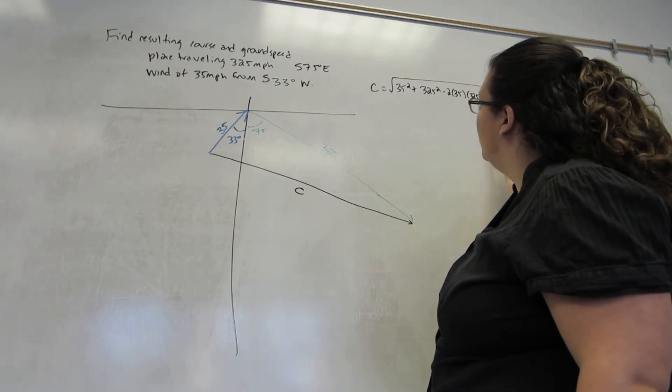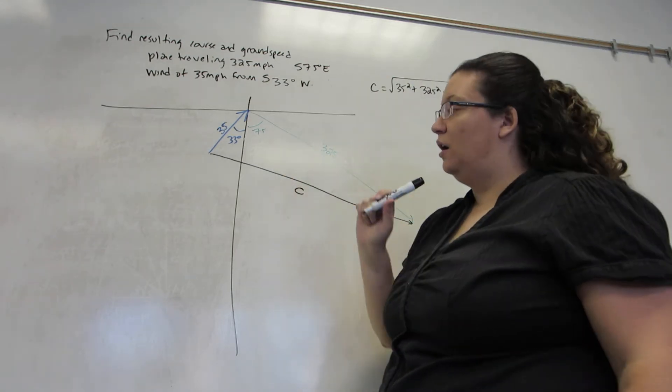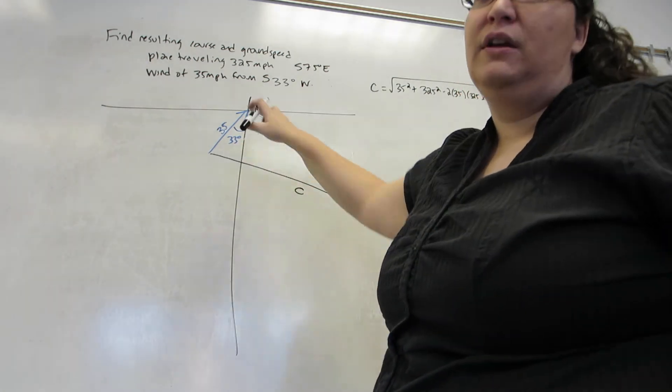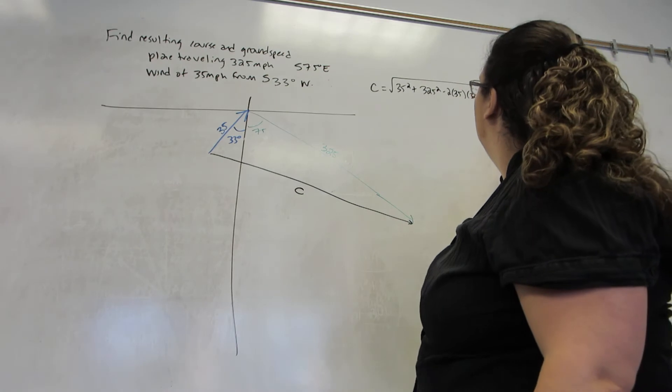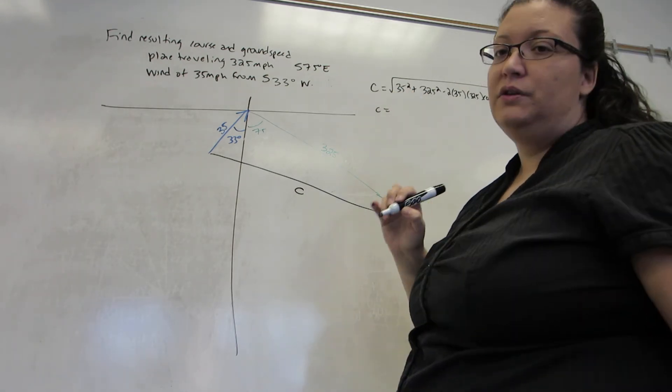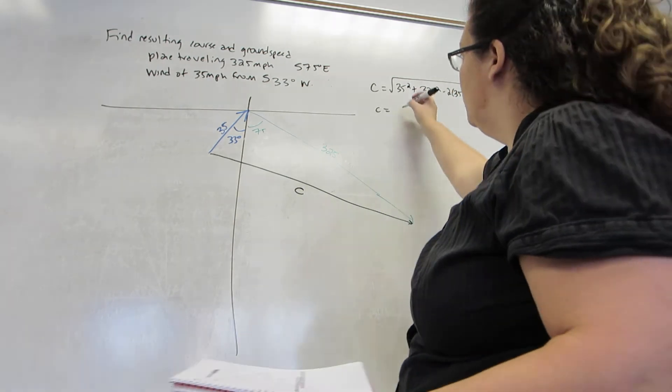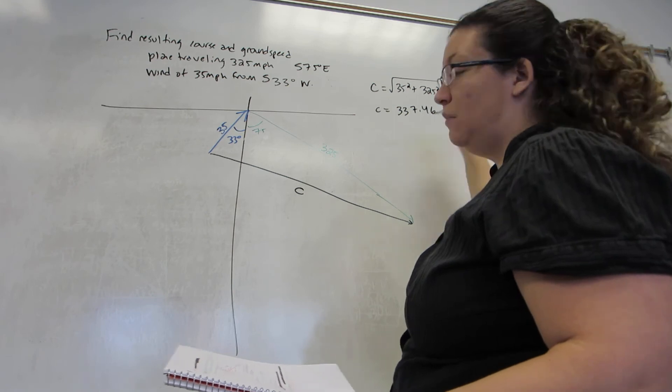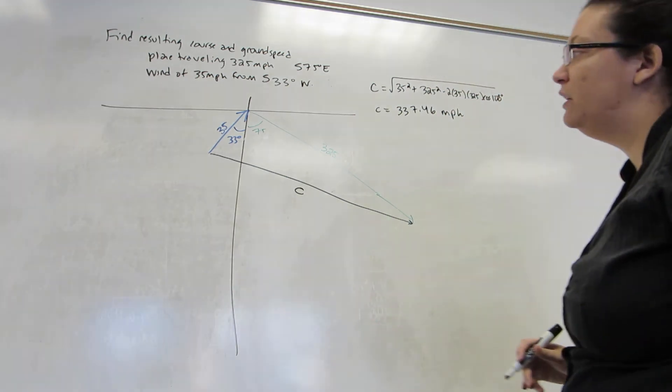35, 325 cosine of the angle opposite C, which is 33 plus 75 in this case, or 108 degrees. So my ground speed turns into 337.46, and it's miles per hour. Don't forget the units.